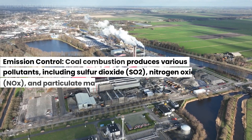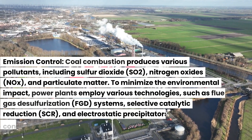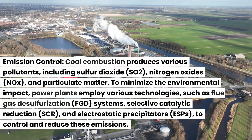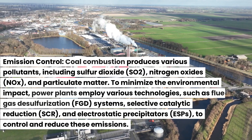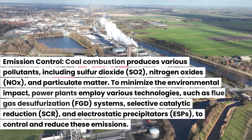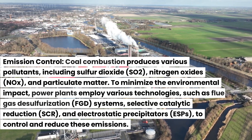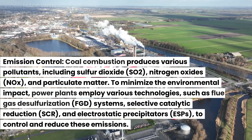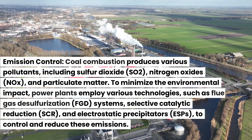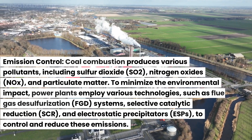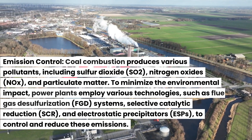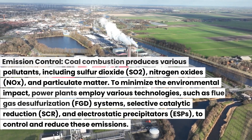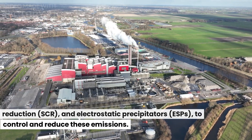Emission control. Coal combustion produces various pollutants, including sulfur dioxide (SO2), nitrogen oxides (NOx), and particulate matter. To minimize the environmental impact, power plants employ various technologies, such as flue gas desulfurization (FGD) systems, selective catalytic reduction (SCR), and electrostatic precipitators (ESPs), to control and reduce these emissions.